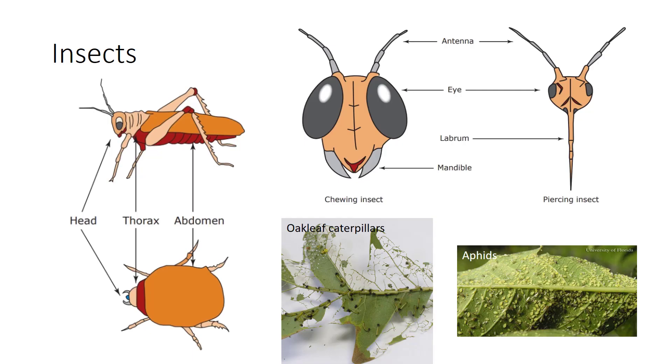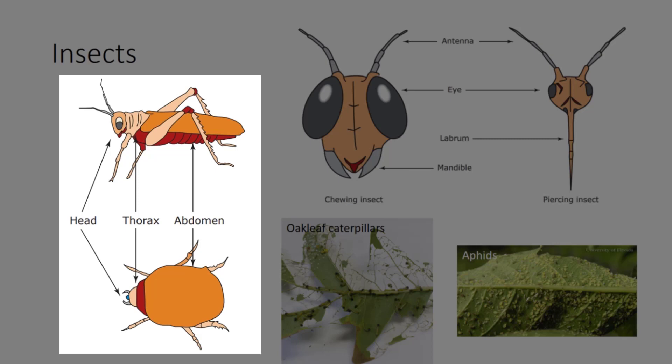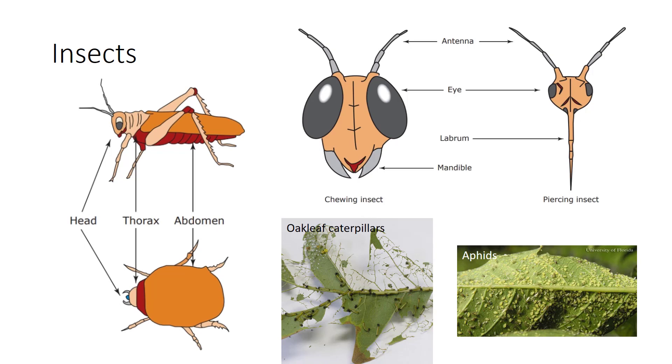Insects are animals with three distinct body parts — head, thorax, and abdomen — three pairs of legs, and one, two, or no pairs of wings. Any deviation from this definition is called an insect-related pest.